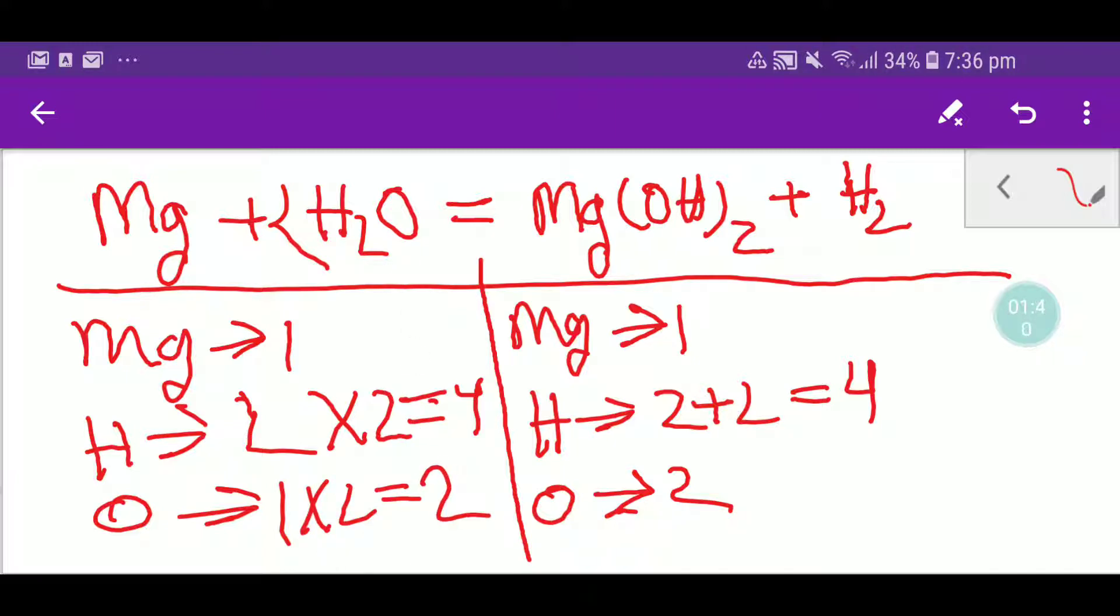So let me write the number of oxygen here. So now you see we have one magnesium, one magnesium, four hydrogen, four hydrogen, two oxygen, two oxygen. So this equation is balanced.